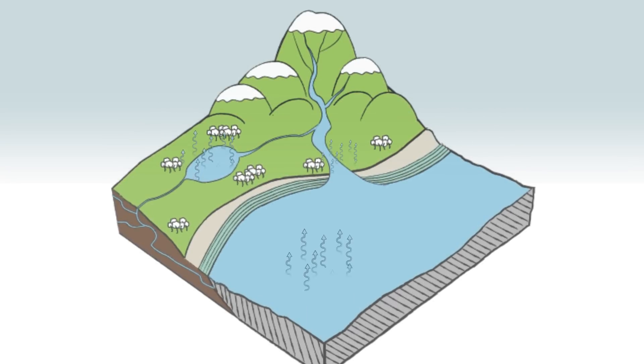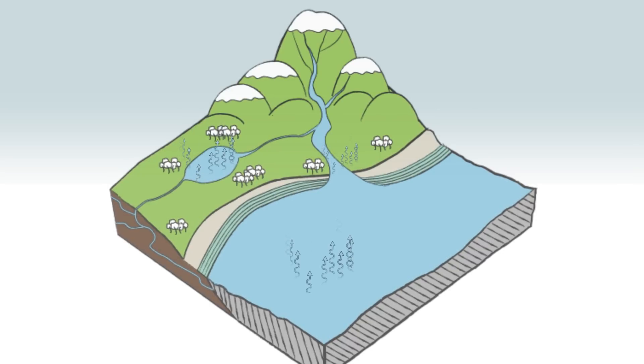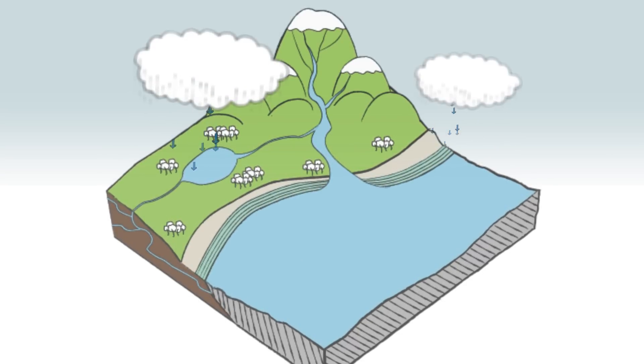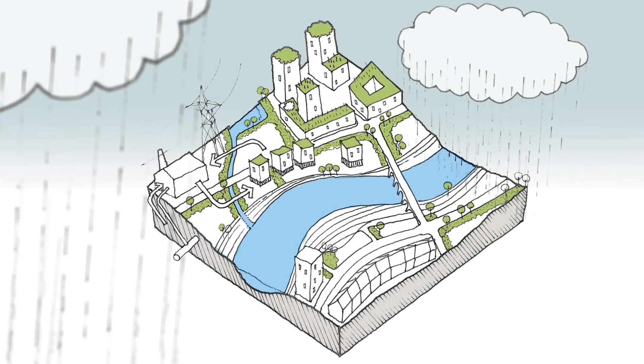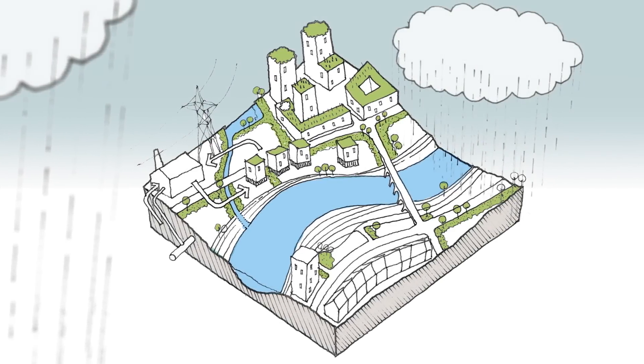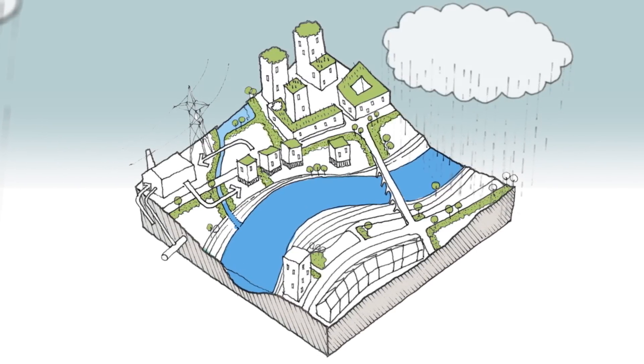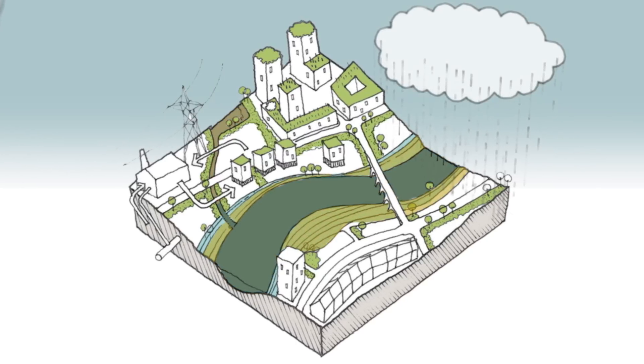This evaporates into the sky and forms condensation which builds up in clouds to again produce rainfall. When water falls on hard man-made surfaces like roads or buildings, it can often disrupt this natural water cycle and leads to problems like flooding and pollution.